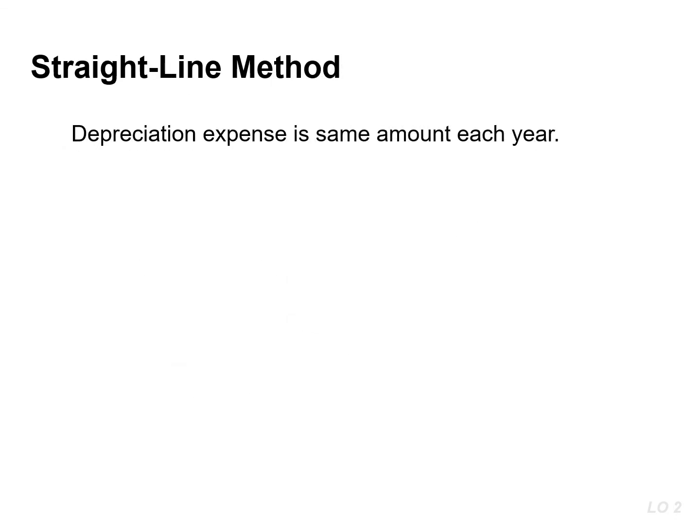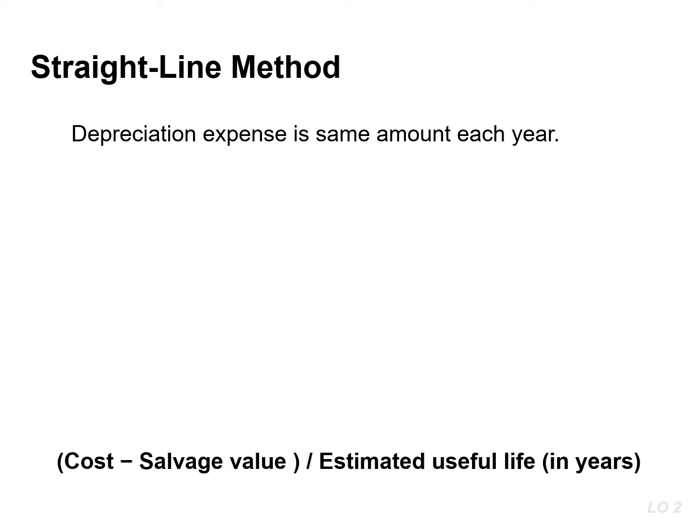Under the straight line method, an equal amount — the same amount of depreciation expense — is recorded each year. The formula for straight line depreciation is the cost minus the salvage value divided by the useful life in terms of years.